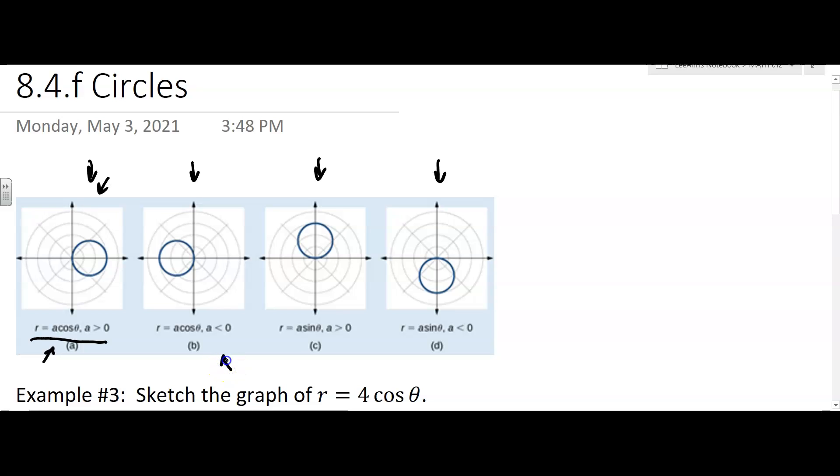So this says if r equals a cosine theta, and a is greater than 0, it's going to look something like this picture. And here's the one if a is less than 0, but you have cosine. And now here we have sine, which is the one we did. We had, for our other previous example, we had r equals 2 sine theta, and it looked like that type of picture.